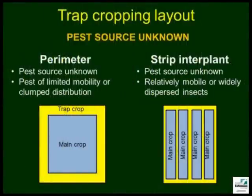Success of the trap crop depends on the choice of trap crops and on design or layout. If the pest source is unknown, it is recommended to use a perimeter system with the trap crops planted on all sides of the main crop. This works well in small farms and rectangular fields. Strip interplanting is a more complex system and is suitable for large farms.